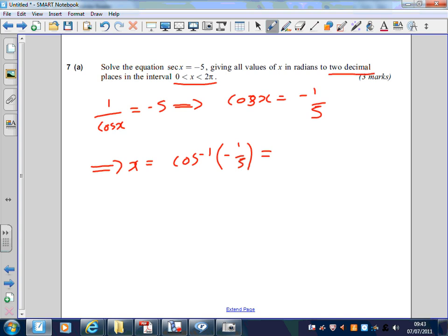Put the calculator in radian mode. So inverse cos of minus 1 over 5 equals 1.77 radians.